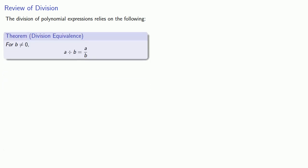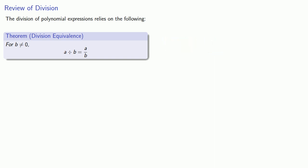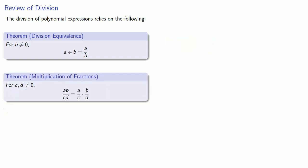To begin with, the division of polynomial expressions relies on the following ideas from the arithmetic of fractions. For b not equal to 0, a divided by b is the same as the fraction a over b. And for cd not equal to 0, ab over cd is the same as a over c times b over d.